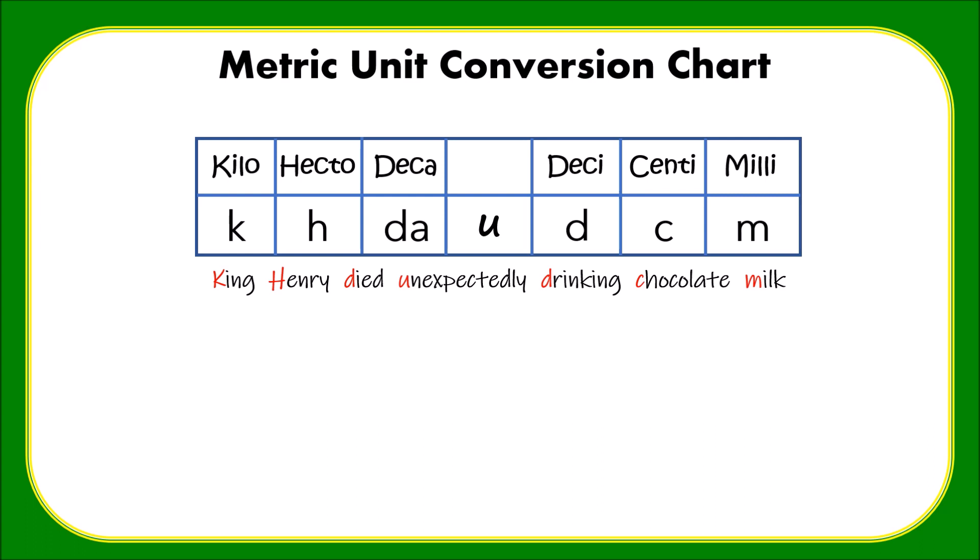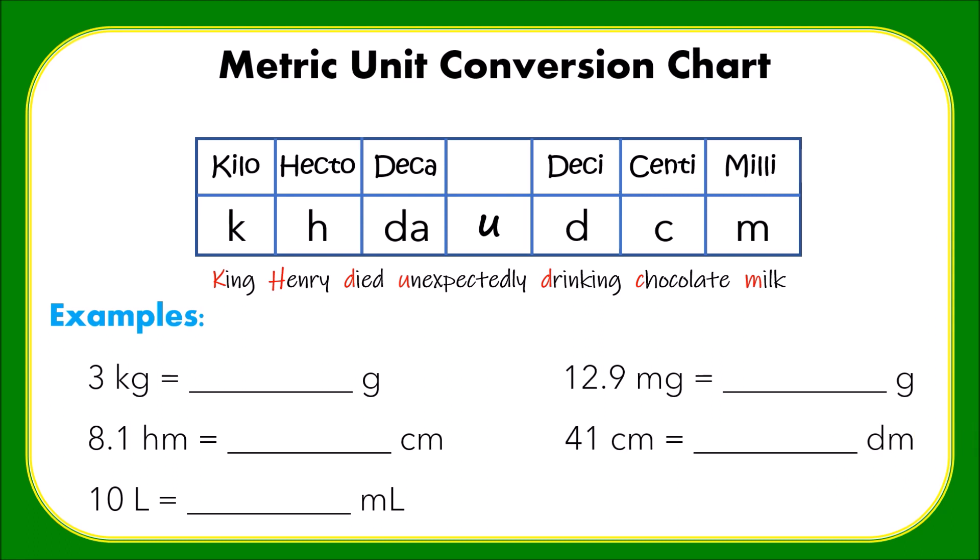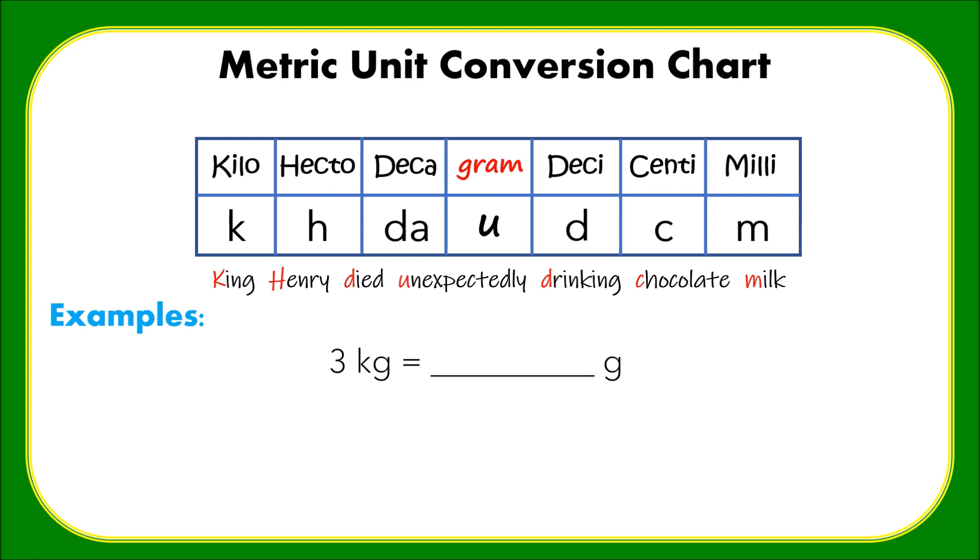In converting, it is also very important to know where is the decimal point. For example, we are going to convert 3 kilograms to grams, 8.1 hectometers to centimeters, 10 liters to milliliters, 12.9 milligrams to grams, and 41 centimeters to decimeters.